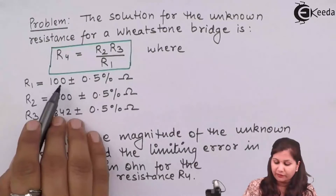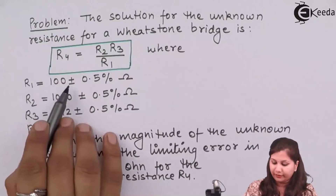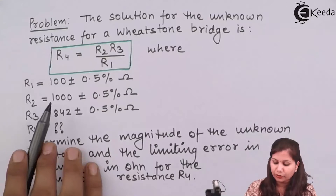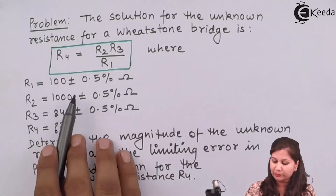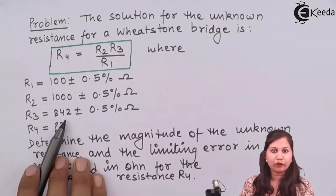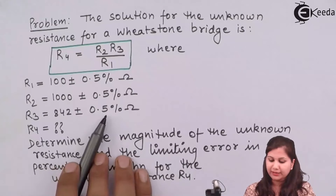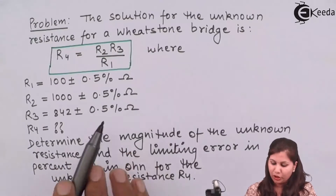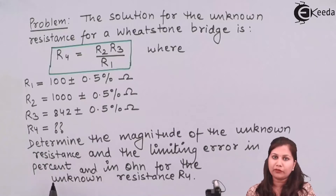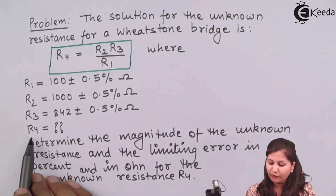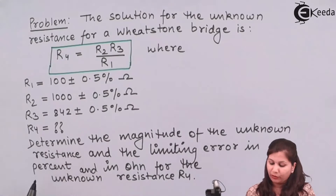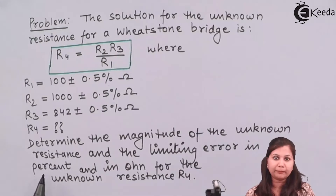Now the resistance R1 is 100 ohm and the error is ±0.5%. The resistance R2 is 1000 ohm and the error is ±0.5%. R3 is 842 ohms and the error is ±0.5%. So in all three resistances the percentage error is ±0.5%. Now we have to determine the magnitude of the unknown resistance R4 and also the limiting error in percent.